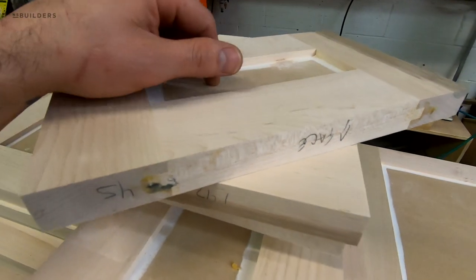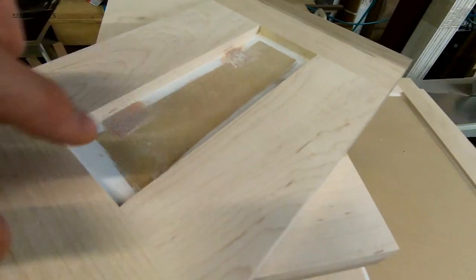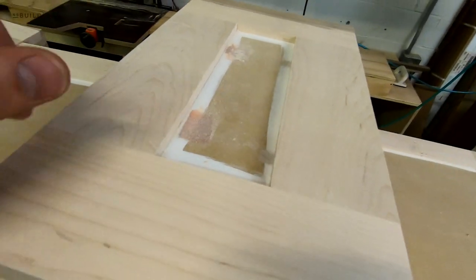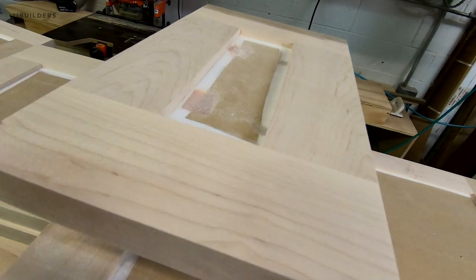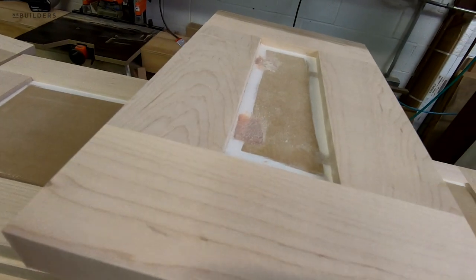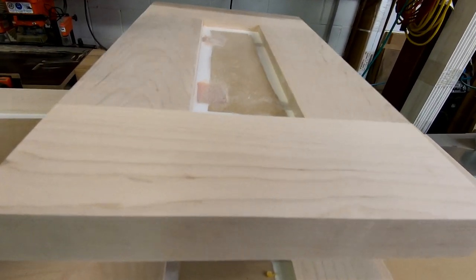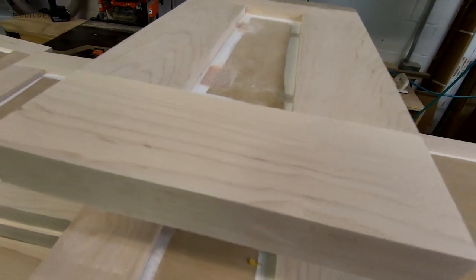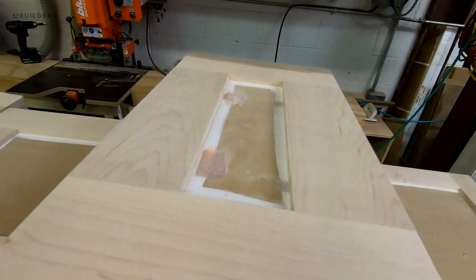These panels actually float in between the groove that is in the rails and styles. We usually leave about three sixteenths of a space in there and use what's called a space ball. It's just a small silicone rubber spacer that will expand and contract with the seasons to allow that panel to move freely and you don't get any hollow sounds in the doors when operating them.